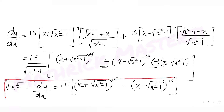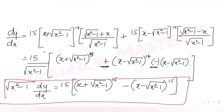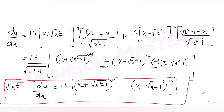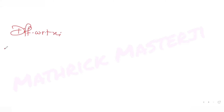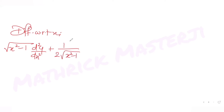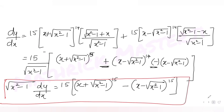Now we need d²y/dx². Differentiating √(x²-1)·dy/dx = 15·[(x + √(x²-1))^15 - (x - √(x²-1))^15] again with respect to x, the left side gives: √(x²-1)·d²y/dx² + (x/√(x²-1))·dy/dx.